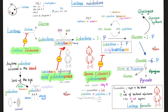Some people are born without galactokinase, giving mild galactosemia, also known as galactokinase deficiency. This is less severe than classic galactosemia, where the deficiency is in galactose-1-phosphate uridyl transferase.